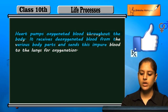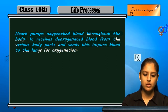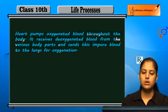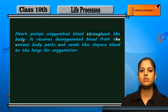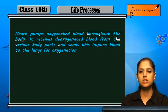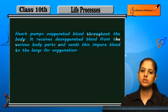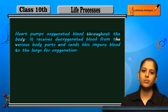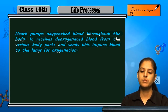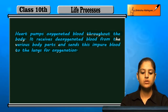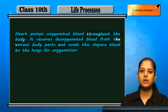The impure blood is sent back to the lungs, where it becomes oxygenated. The lungs oxygenate the blood, and the oxygenated blood is then supplied to the whole body and all body parts.